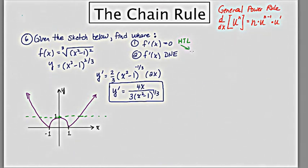what I'm going to do is take the derivative 4x over 3 times x squared minus 1 to the 1 third, set it equal to 0, which I'll make 0 over 1. Cross multiplying I get 4x is equal to 0, x is equal to 0.